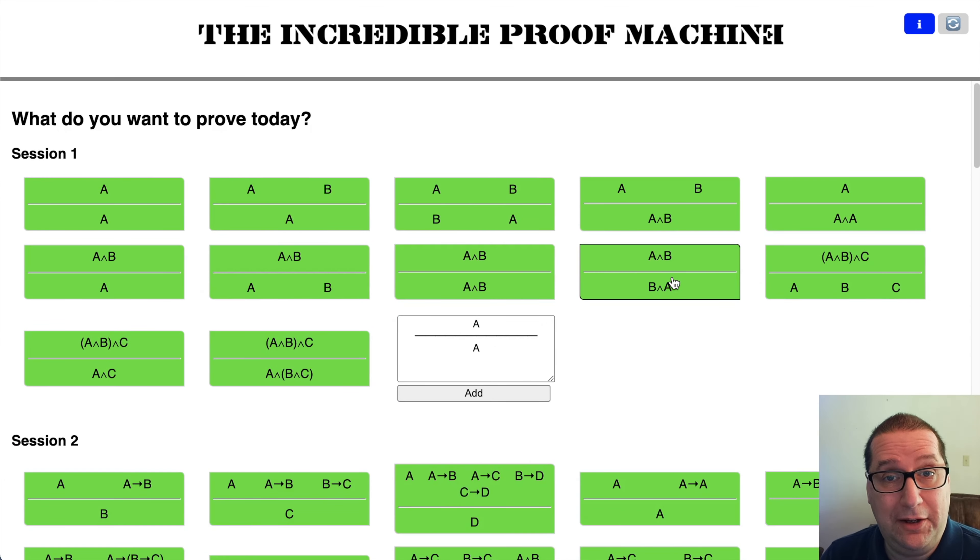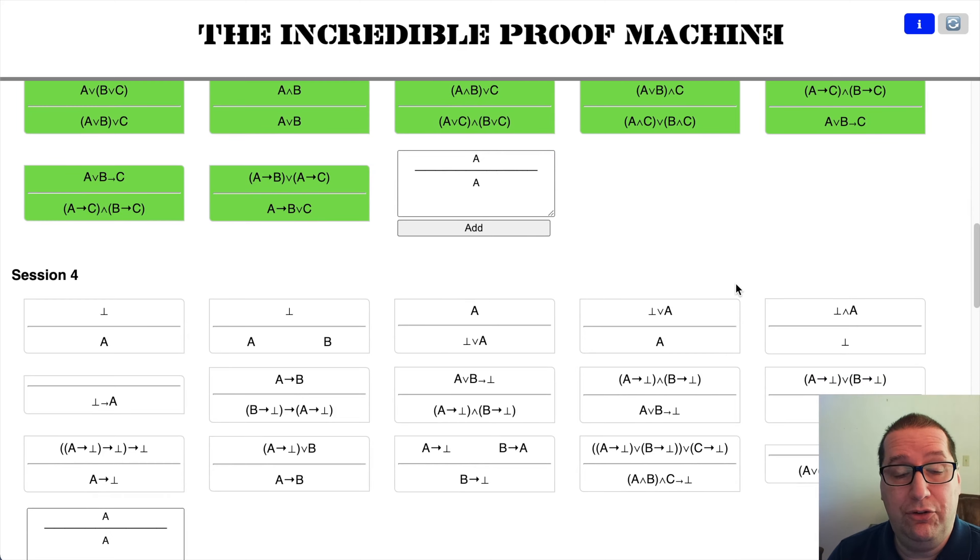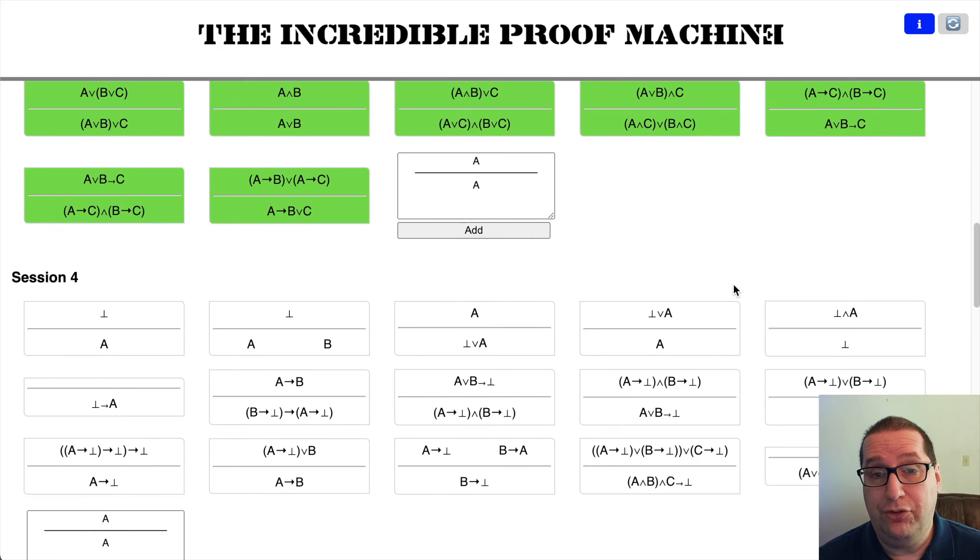Hi, and welcome to Programming Like It's 1979. We are working our way through the incredible proof machine. Today, we're going to be looking at session four, which is going to be using the bottom or false concept.